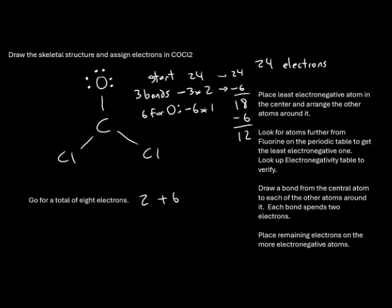Since the least electronegative atom is carbon, we leave that for last. With 12 electrons remaining, we place six around the left chlorine and six around the right chlorine — that's negative six times two, giving negative 12. Taking 12 minus 12 gives us zero electrons left, so carbon is not going to get any more electrons.